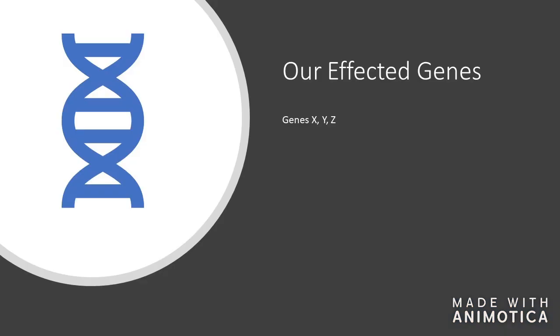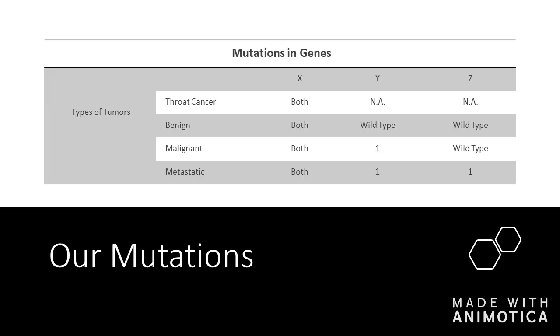The affected genes we looked at were genes X, Y, and Z. In this chart here, I have our types of tumors that can come about and the mutations in which genes that lead to them.